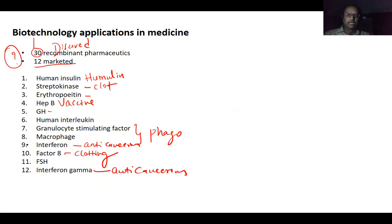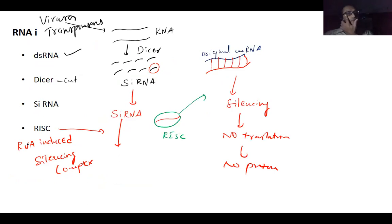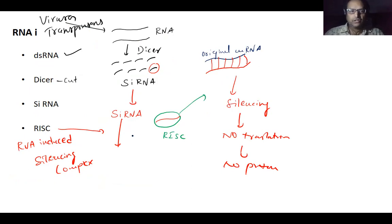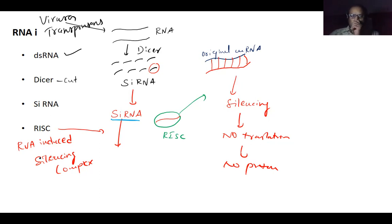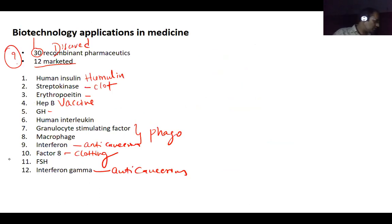That completes the discussion of RNA interference technology, which silences genes using double-stranded RNA introduced via viruses or transposons, ultimately forming small interference RNA. This concludes the agriculture biotechnology applications. We now move to biotechnology applications in the field of medicine.